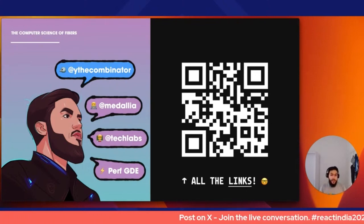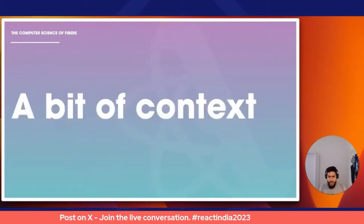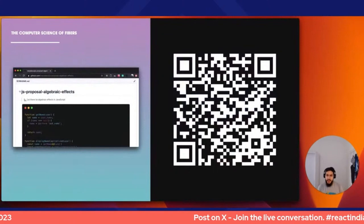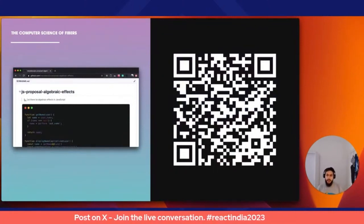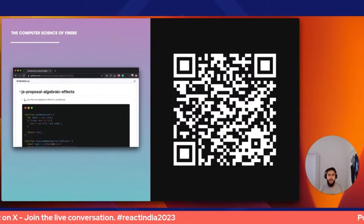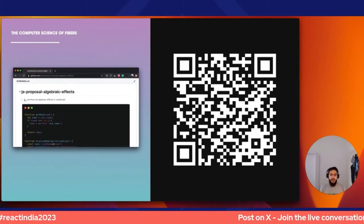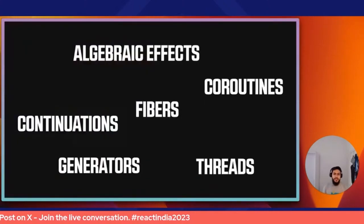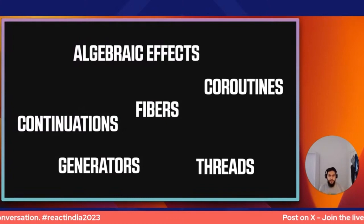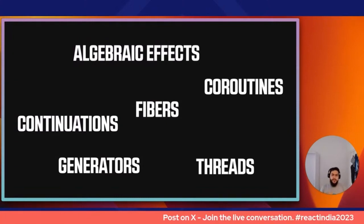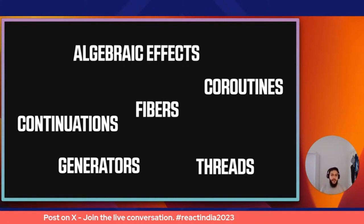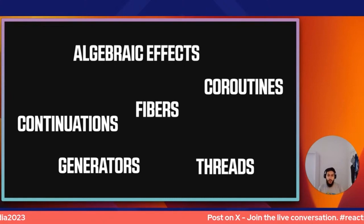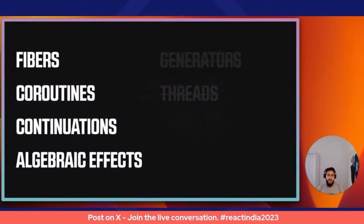The links for these slides are available on the QR code along with other links about me. A couple of years ago a friend of mine, Bruno, was working on a proposal for bringing algebraic effect handlers to JavaScript and asked me for feedback. Reading it, I found a lot of terminology I wasn't fully familiar with — generators, threads, fibers, continuations, algebraic effects, coroutines, and more.